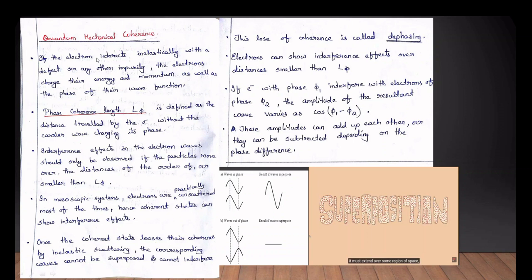We are in the same phase of coherence. Each phase is a different phase. Each phase is a parameter of phase coherence — the distance traveled by the electron without changing its phase.